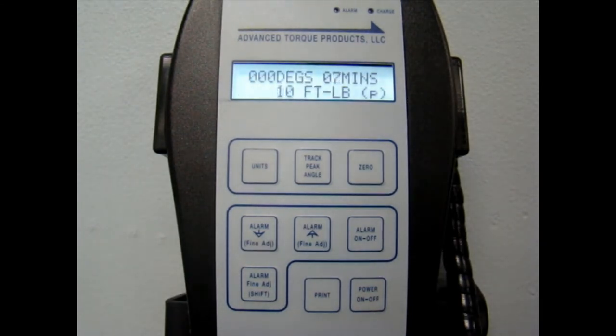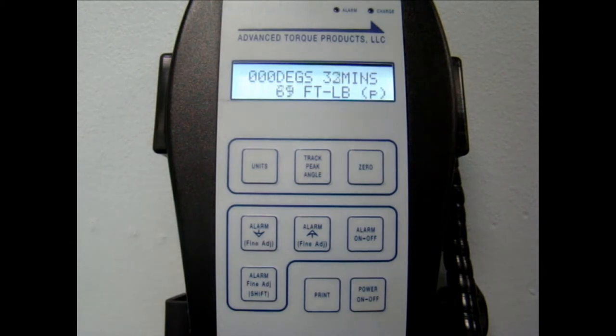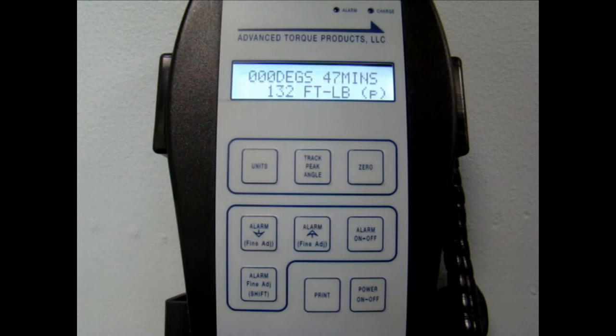Angle mode simultaneously displays the torque and angle of turn in degrees and minutes. This feature is found on ATP multipliers equipped with an angle encoder. This mode is used during applications that require both torque and angle specifications.